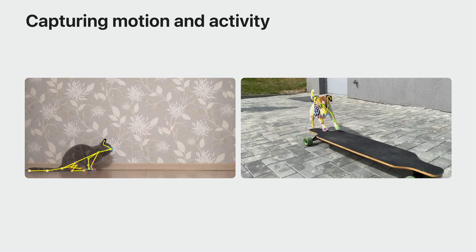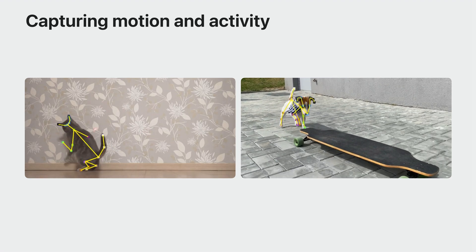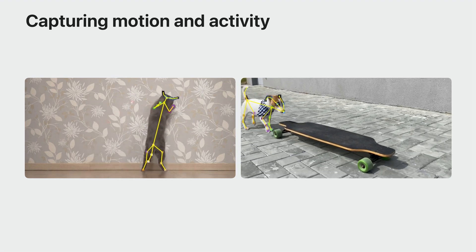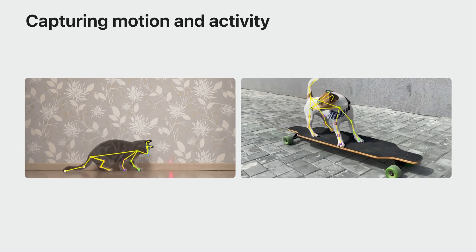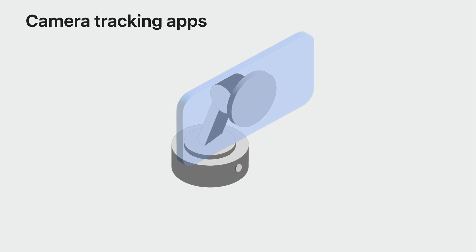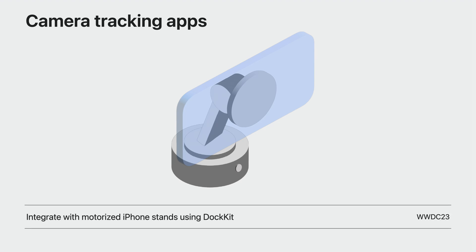The animal pose API can also be used with videos. You can bring your own algorithms to analyze the motion and determine what type of activity your animal is doing. You may even go further to understand your animal's behavior by tracking the poses over time. For example, I discovered that marks I thought were from my kids were actually the cat trying to catch a laser pointer. Another use is to track the animal with the camera. To learn more about that kind of tracking, please refer to the session 'Integrate with Motorized iPhone Stands with DockKit'.